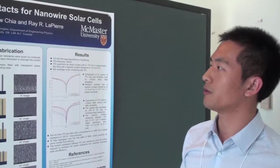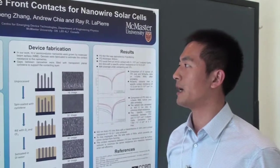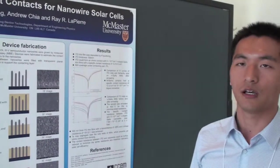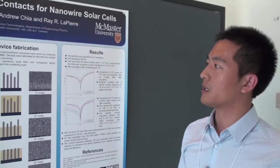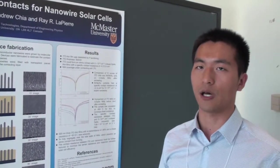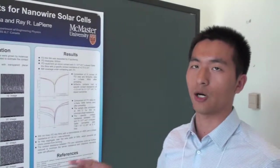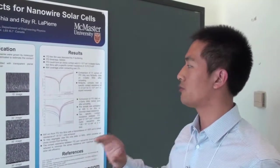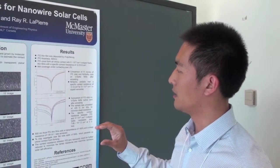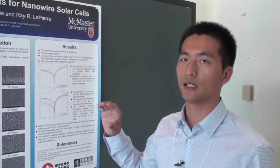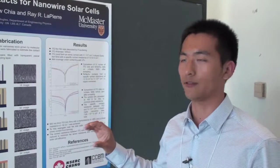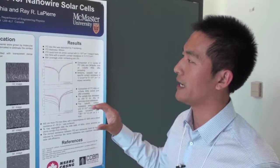Gallium arsenide nanowire solar cells are third generation solar cells using semiconductor nanowires that have excellent light trapping effects. To reduce the shadow loss and maximize the light absorbed by the solar cell, we need to find a very transparent, highly conductive contact layer.